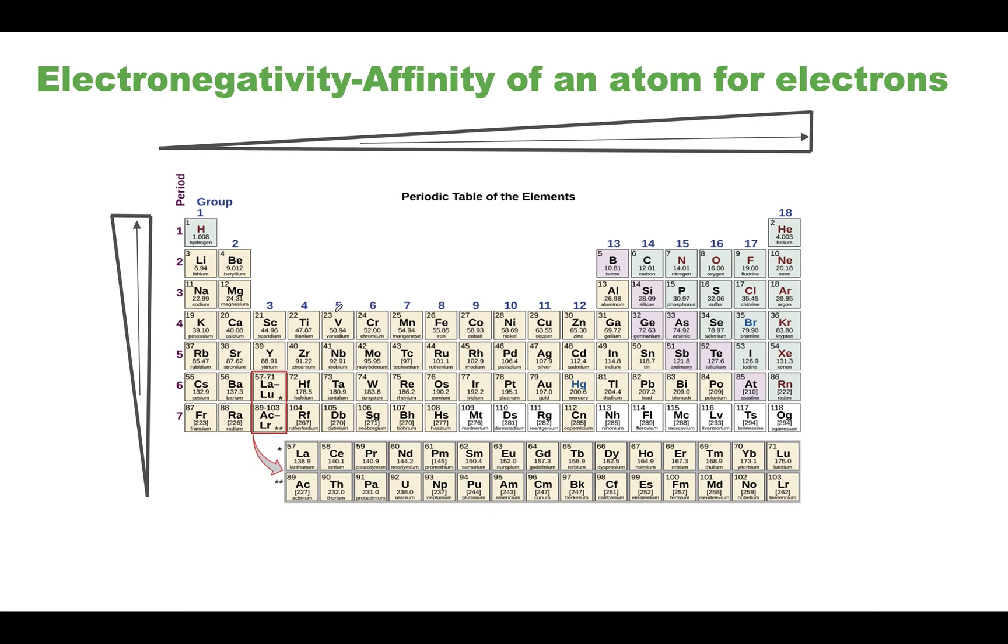Here it is again in the periodic table. As you go from left to right electronegativity increases, and as you go down electronegativity actually decreases.